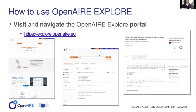To use the OpenAIRE Explorer, you can directly visit and navigate the OpenAIRE Explorer portal, where you can find search forms to make keyword searches and apply filters. For every research output, you will find a dedicated page where all the metadata and links to other research outcomes are available.